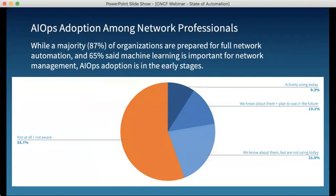One surprise from our survey: while a majority said they're prepared for full network automation and 65% said machine learning is important, AIOps adoption is still in the early stages. Only about 10% said they were using AIOps today. We think this is because AIOps is really a collection of capabilities inside a platform, and platform availability and adoption is something we expect will increase as more network professionals turn to AIOps platforms to resolve growing network complexity.